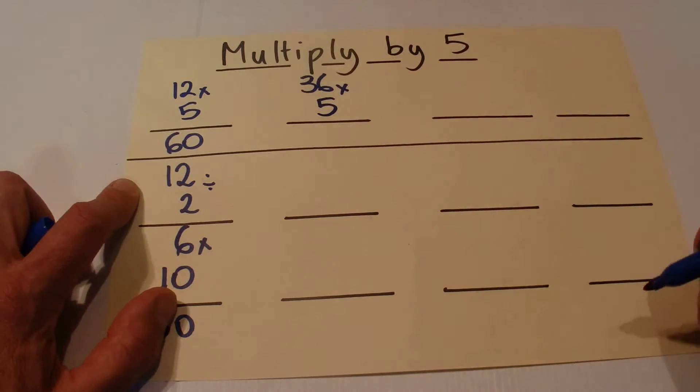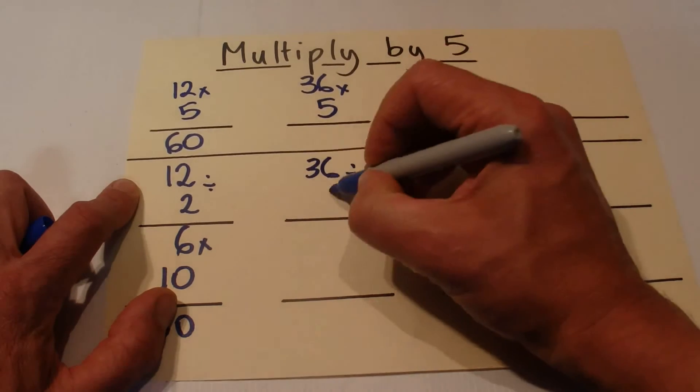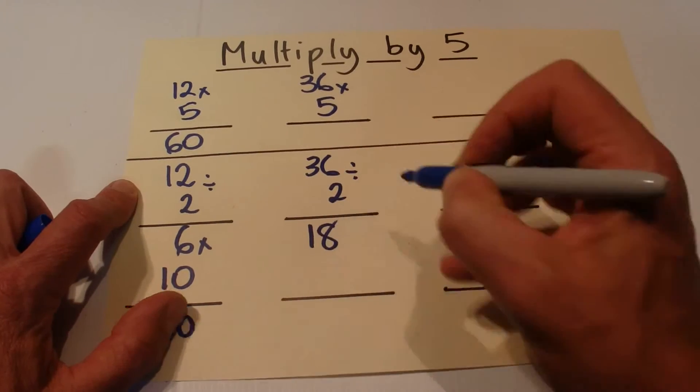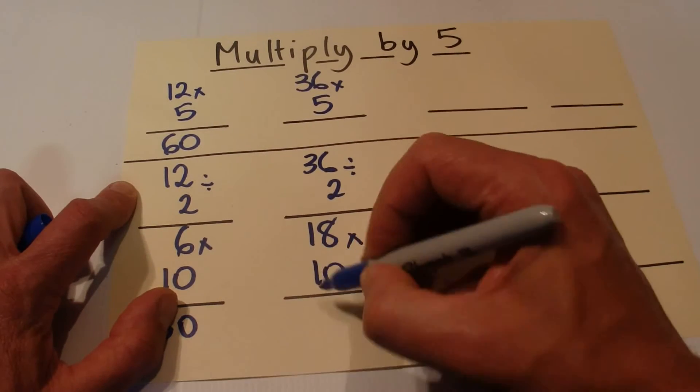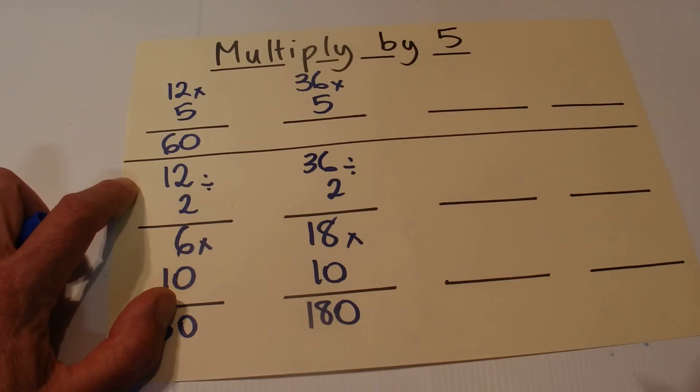One that's a little bit more difficult: 36 times 5. Half of 36 is 18, and we multiply that by 10, which is just a matter of taking the 18 and putting a 0 on the end. So the answer to 36 times 5 is 180.